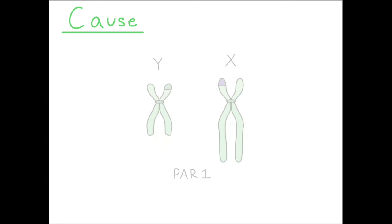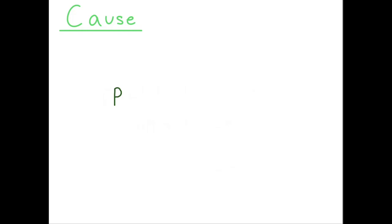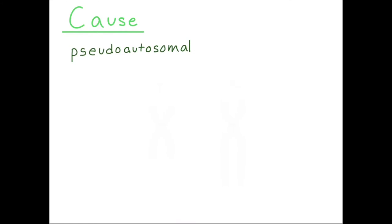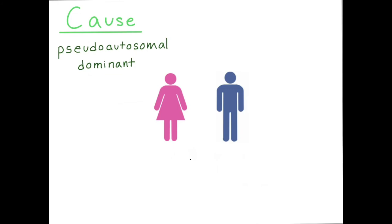Thus, a man with LWD will produce some sperm with a SHOX mutation on the X and others with a SHOX mutation on the Y, regardless of which chromosome he inherited it on. This inheritance is called pseudoautosomal, since it looks like how mutations are inherited on autosomes. Since a single copy of a SHOX mutation is enough to cause LWD, the inheritance pattern is pseudoautosomal dominant. Affected males or females each have a 50% chance of passing the disease to a child, whether girl or boy.